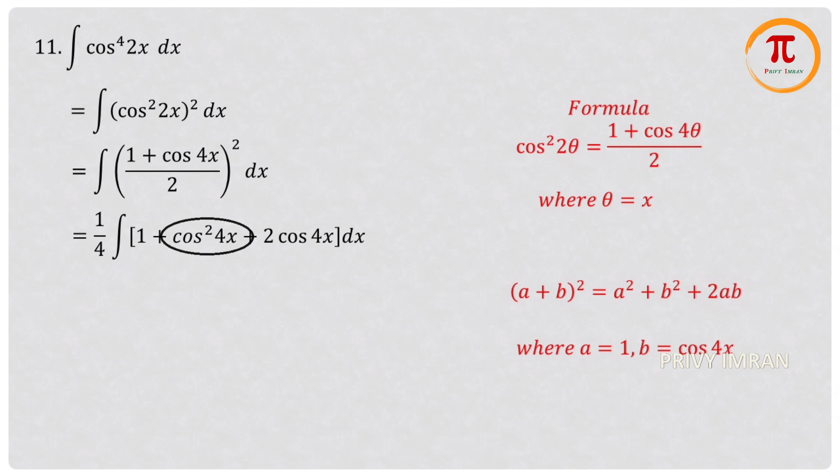If you observe my second term, it is in the form of cos²2θ which is equal to (1 + cos4θ)/2 where θ = 2x. Now let me implement in my second term. If you observe in my second term, let me split the numerator.